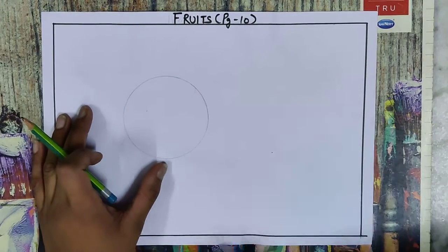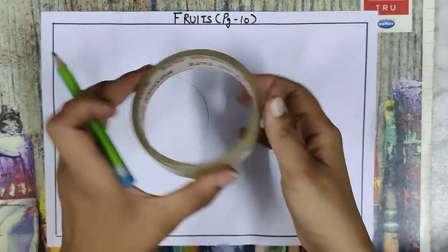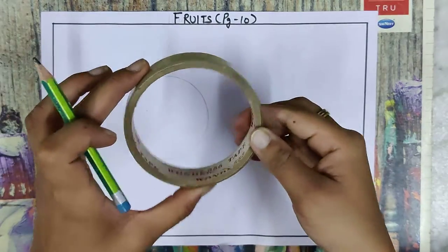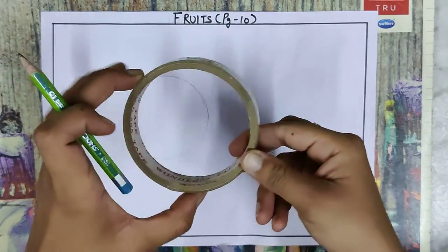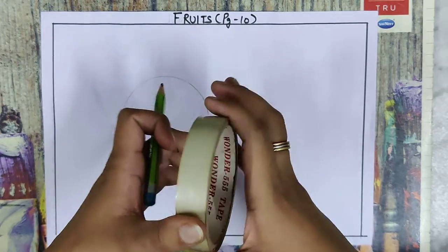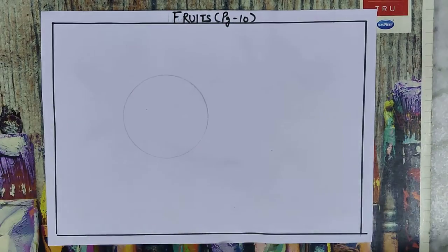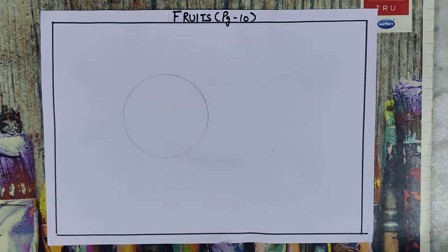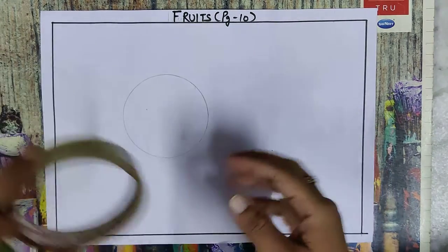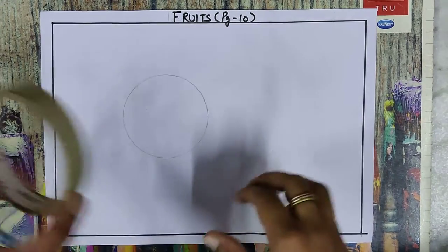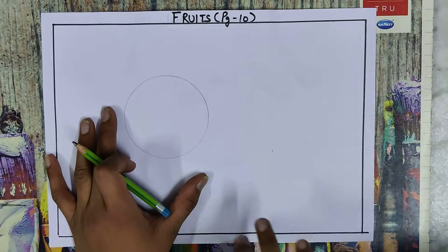So we have drawn a circle. You can use any utensils like a tape roll, bottle cap, or bangle. You can use any round shape that you have available. First, we have drawn a circle.